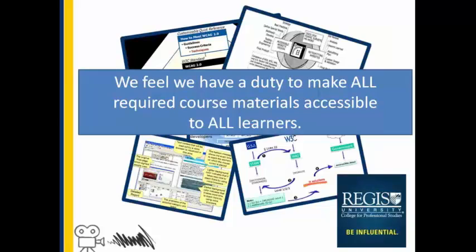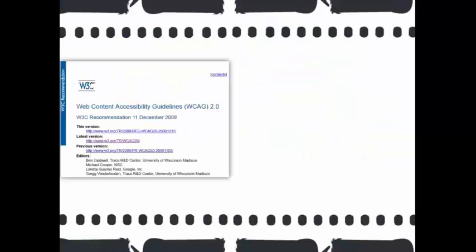So about a year ago, we adopted a college-level accessibility policy to guide our course development and assure that we are fulfilling this duty. Our policy was shaped around the Web Content Accessibility Guidelines, WCAG 2.0 version, which covers a wide range of recommendations for making web content more accessible.